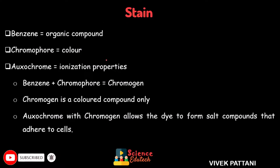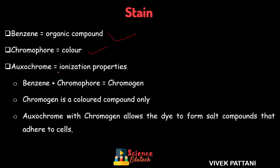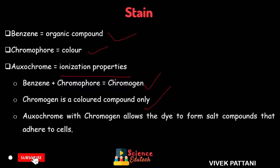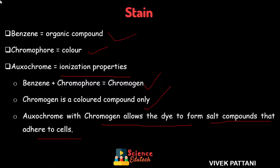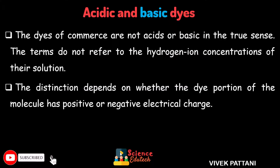To summarize: a stain is an organic compound; benzene is the ring structure; chromophore is the colored component; oxochrome is related to ionization properties. Benzene plus chromophore gives a chromogen, which is a colored compound. The oxochrome allows a dye to form salt compounds that adhere to the cells — in simpler terms, the oxochrome helps the stain give color to the cells by attaching to them.